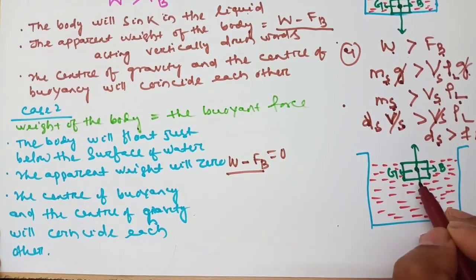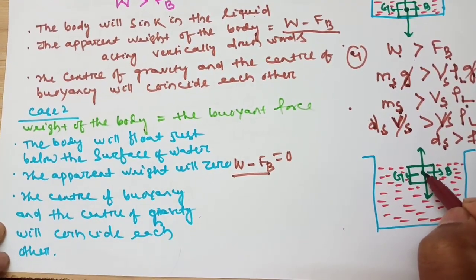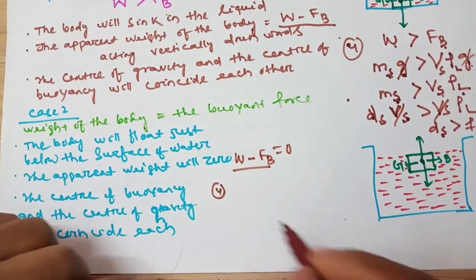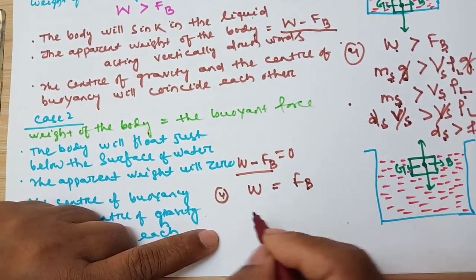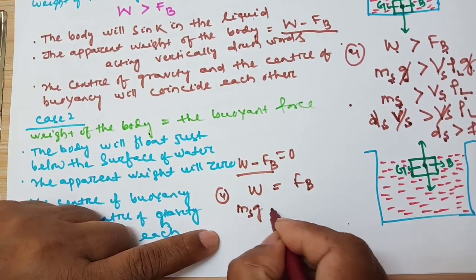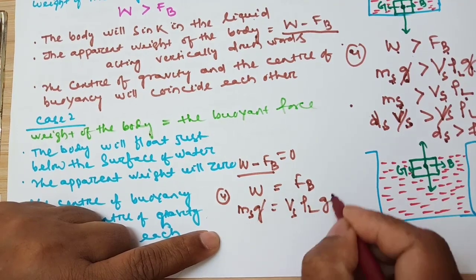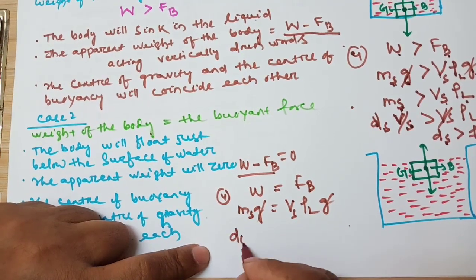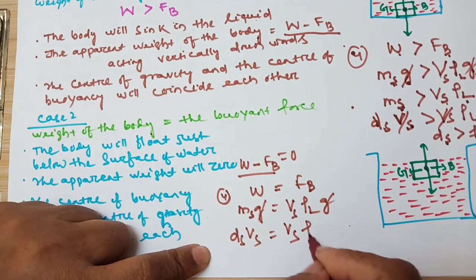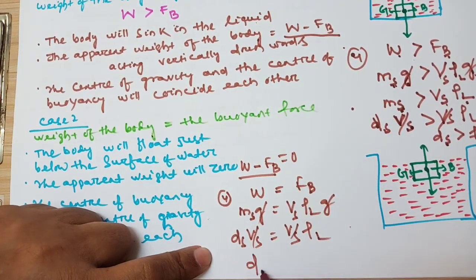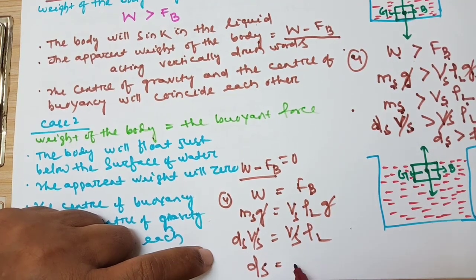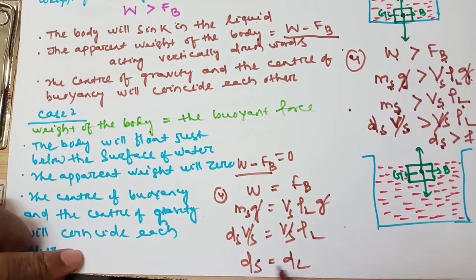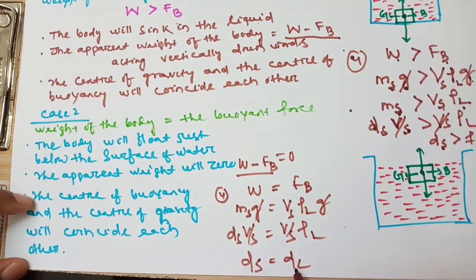Third point: the center of buoyancy and the center of gravity coincide with each other. Fourth point — the relation between density: W equals buoyant force. Mass of solid into G equals volume of solid into density of liquid into G. G cancels. Putting mass as density into volume, volume cancels. So density of solid is equal to density of liquid.